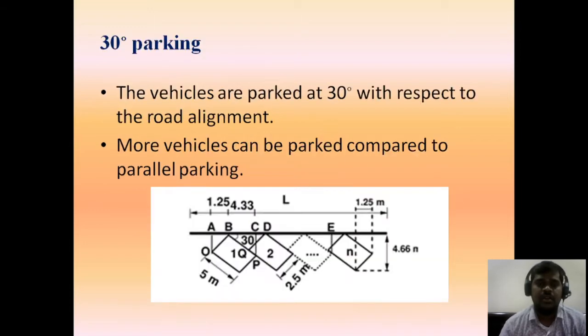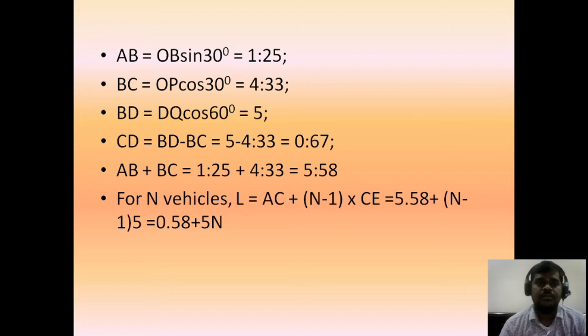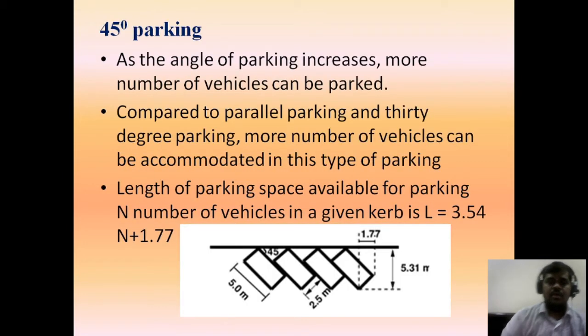Using this diagram, we can calculate the total length of parking used if vehicles are parked at 30 degrees. In the same manner, we have 45-degree parking. As the angle of parking increases, more vehicles can be parked. The L value for 45-degree parking is 3.54N + 1.77.